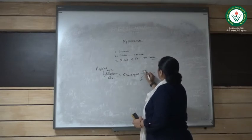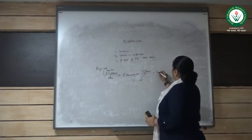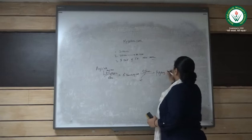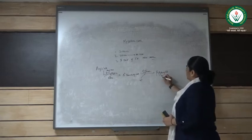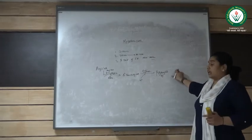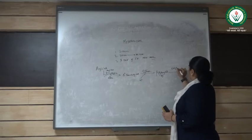It gets converted into beta-hydroxy acyl coenzyme A. After this, this again undergoes dehydrogenation and one molecule of NADH is produced.